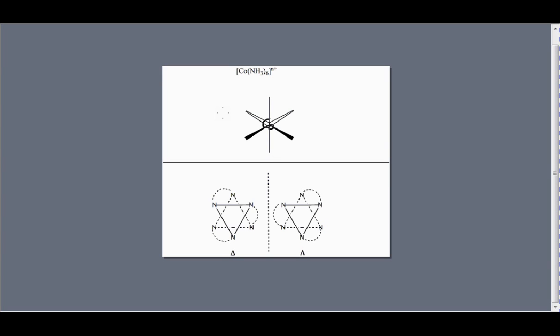This video is going to talk about optical activity with respect to inorganic compounds. The example I want to look at is best described from an octahedral species such as cobalt hexamine N plus, where N plus is usually 2 plus or 3 plus, and we'll start that off with our first example.